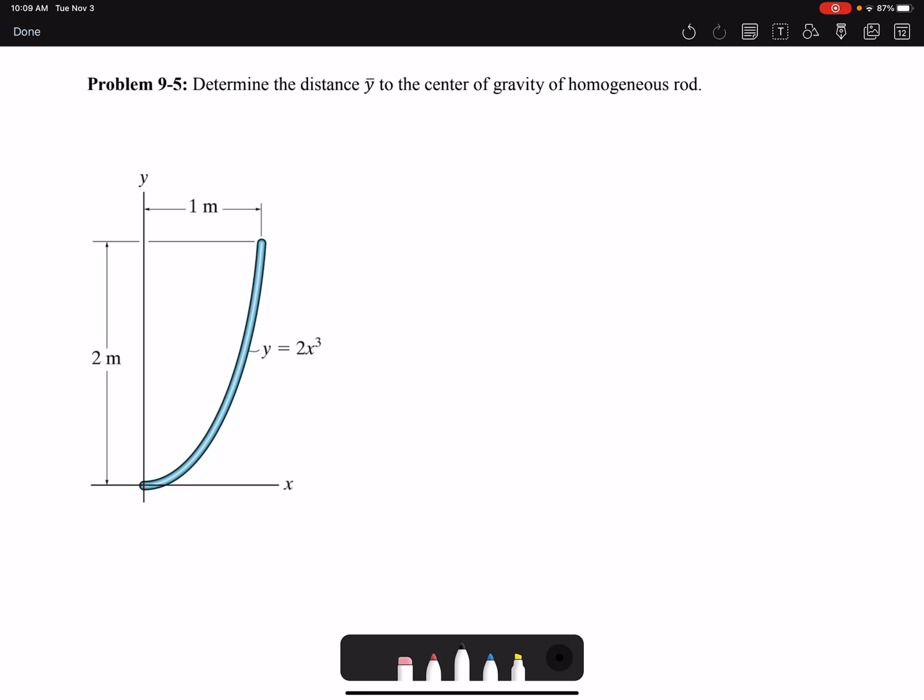The rod is one dimensional, but because it's in a 2D space we have both x̅ and y̅. x̅ is x̃dl for a one dimensional bar over dl, and y̅ is ỹdl over dl. The problem is asking for only y̅, but the procedure is the same if you want to find x̅ as well.